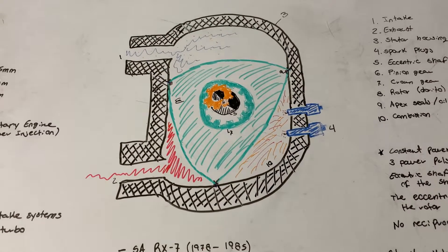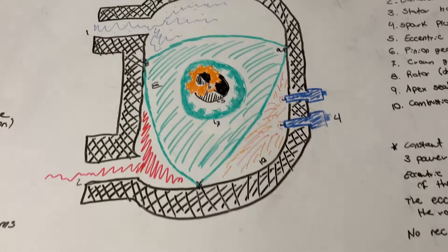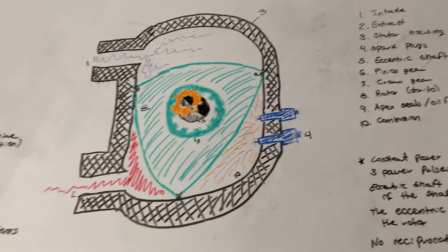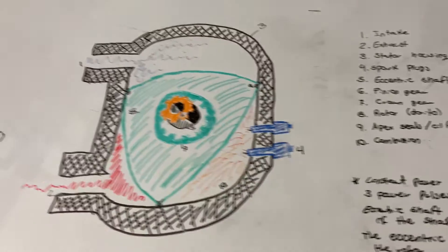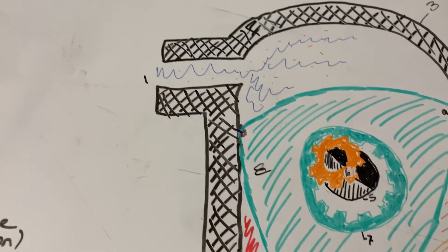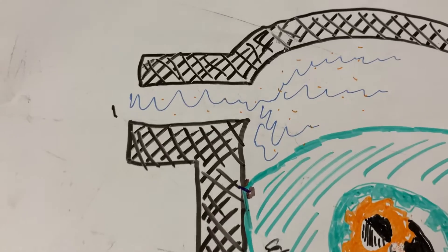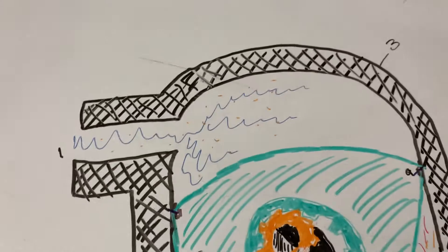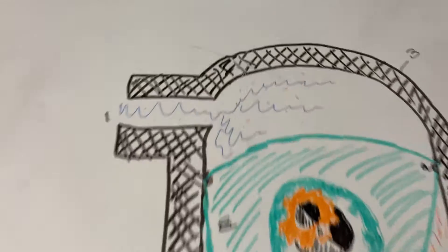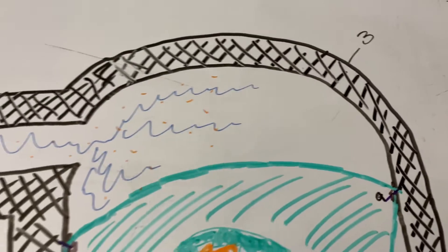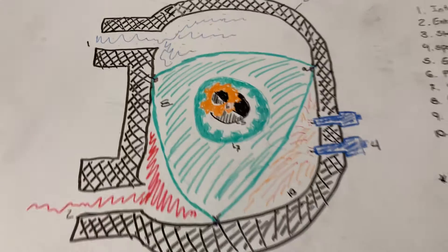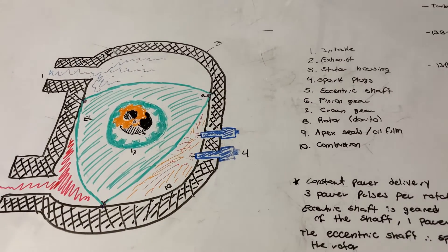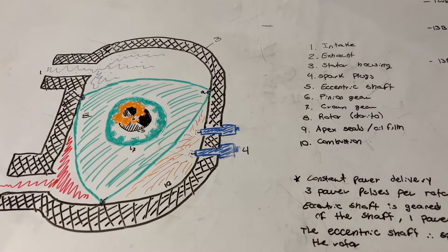I have drawn the most basic engine layout and labeled the parts. Number one is your intake port, and you can see the little orange there — that would be your fuel mixture, with the blue being the air. This big part right here would be considered the intake chamber.